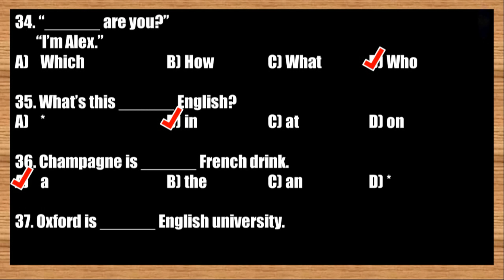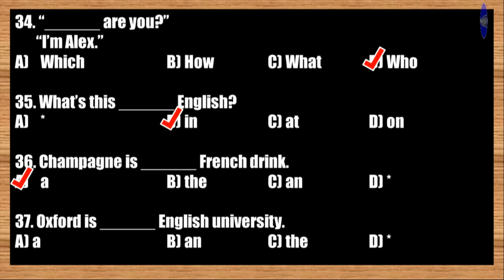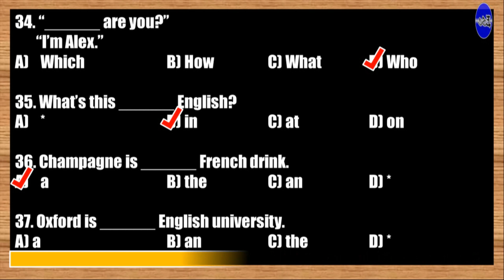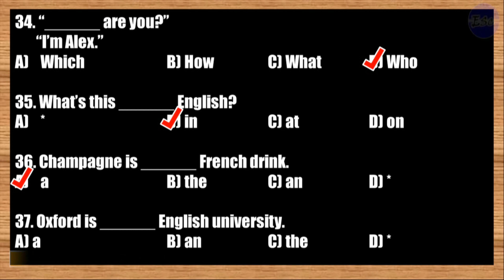Number thirty-seven: Oxford is blank English university. A: a; B: an; C: the; D: blank. The correct answer is option B. Oxford is an English university.